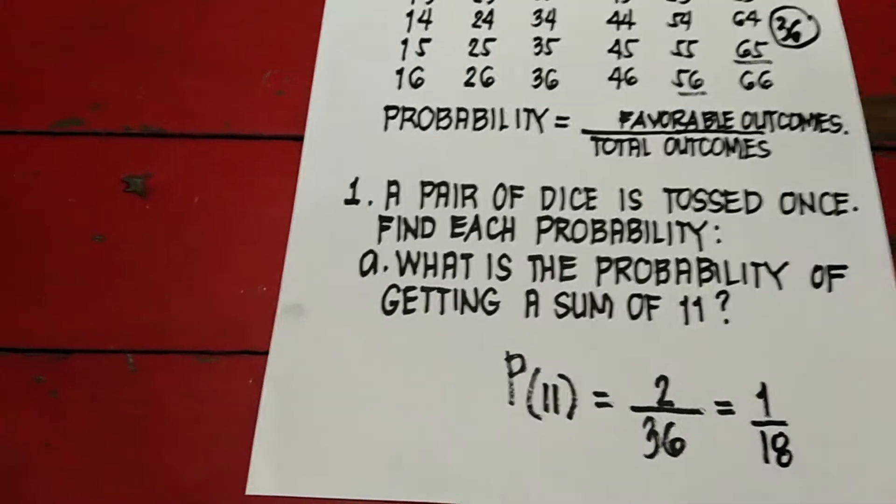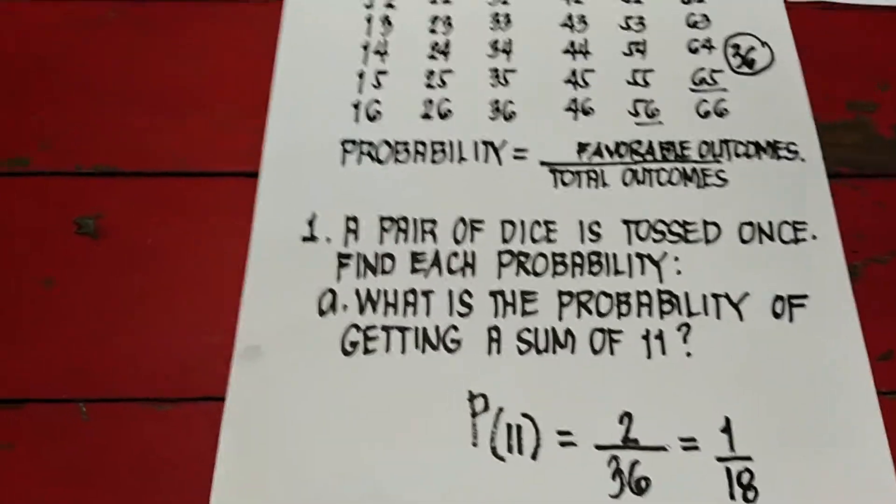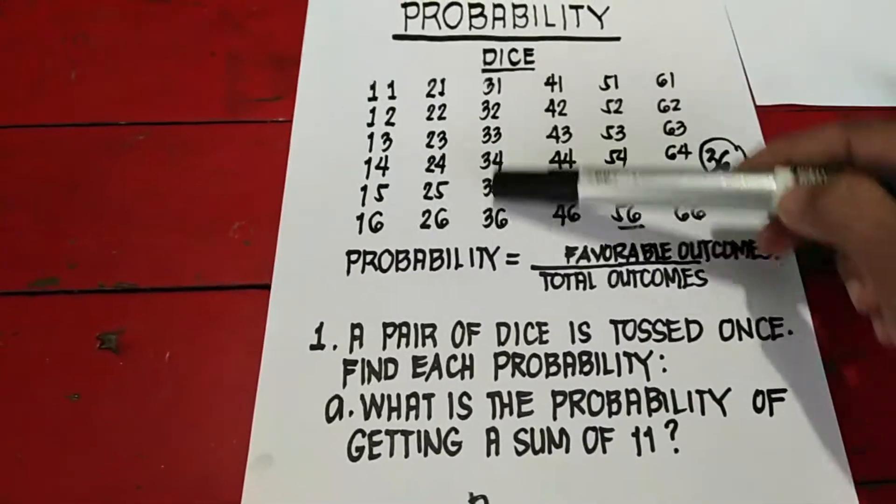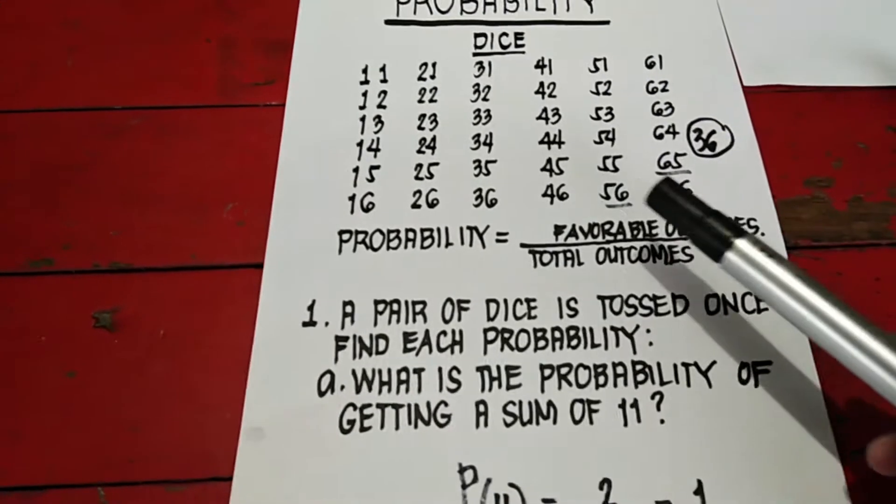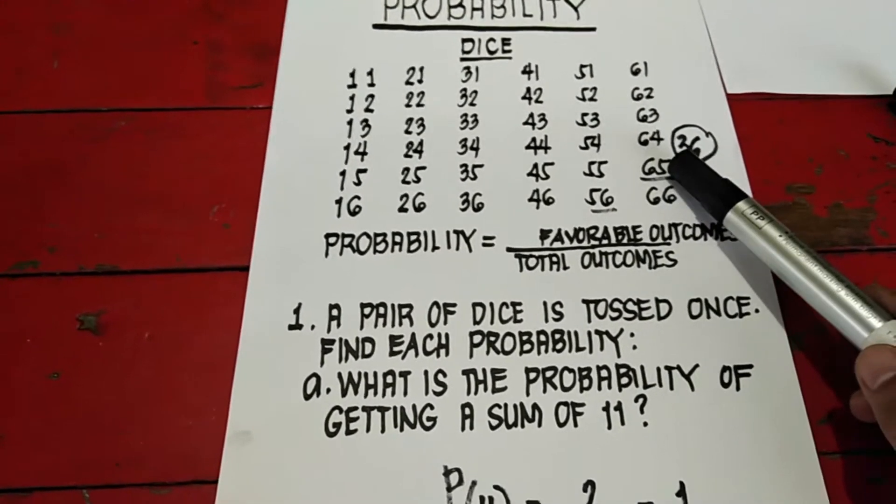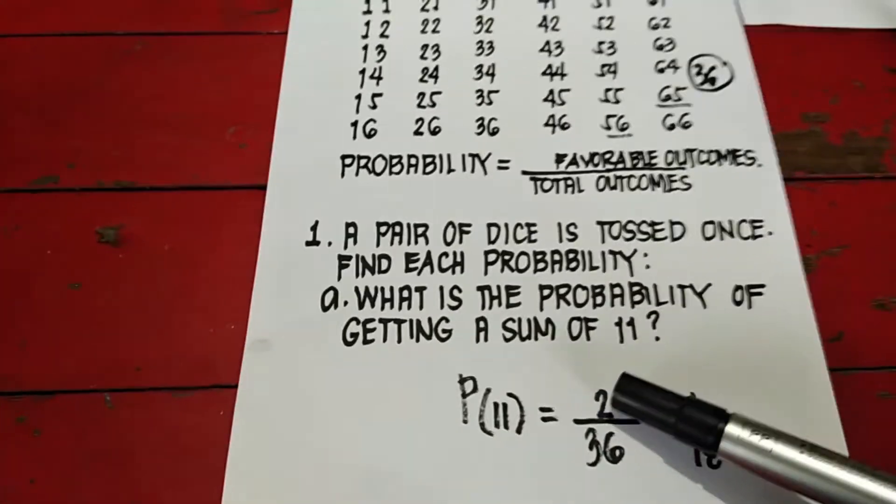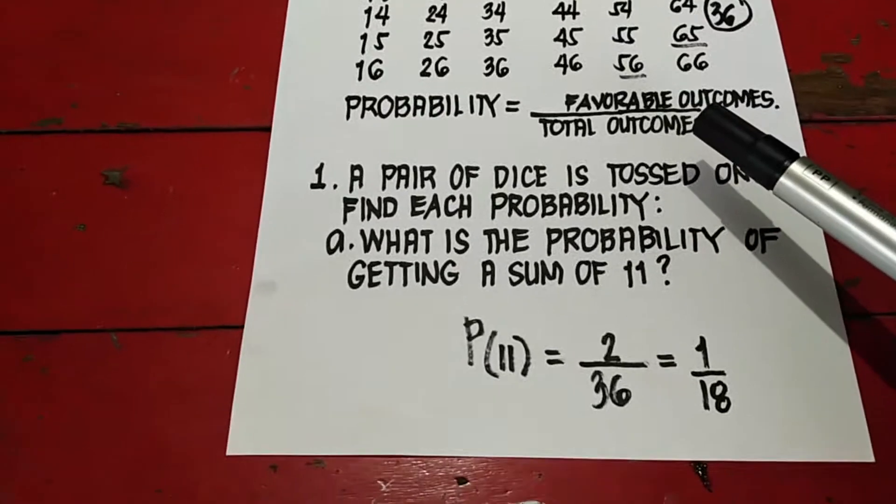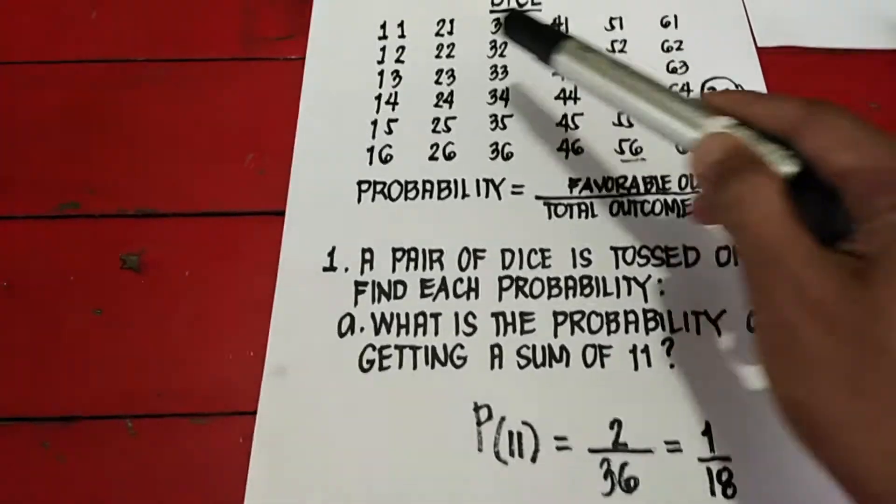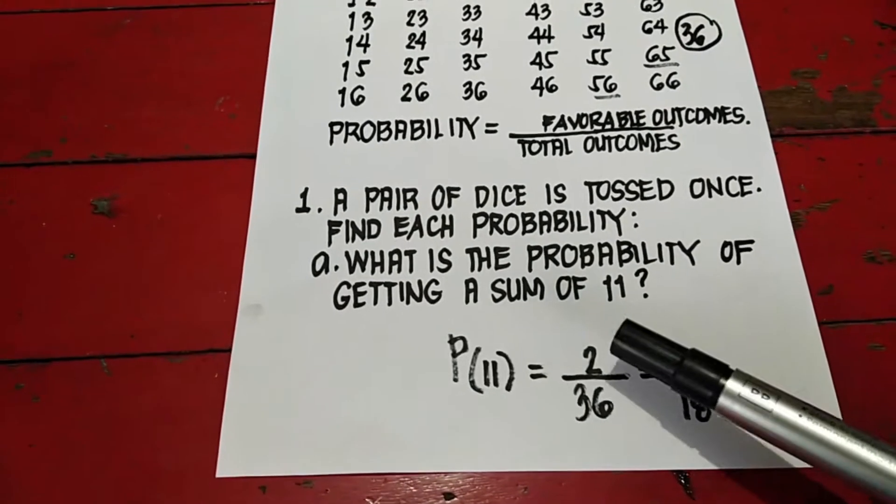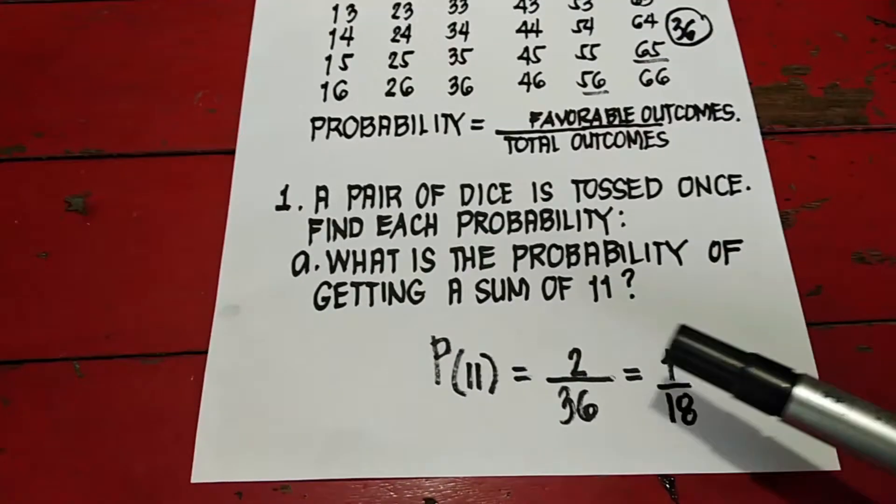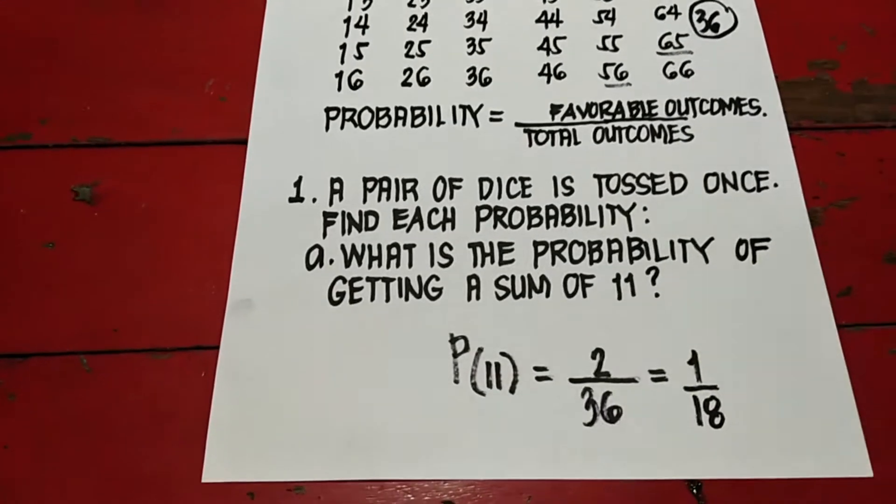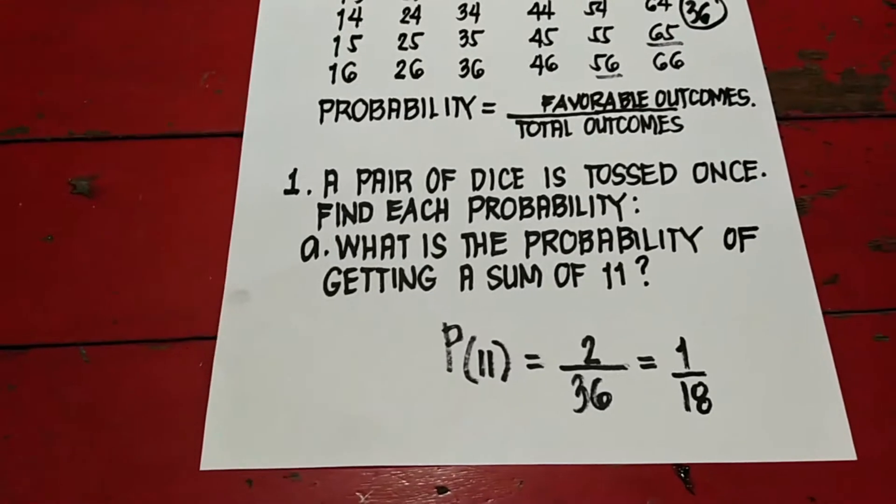Tingnan natin yung sum na 11 dun sa mga possible outcomes dun sa dice. Wala din dyan. Ang possible na 11 lang is yung 5, 6 and 6, 5. 6 plus 5 is 11. 5 plus 6 is 11. So dadalawa lang sila. Divided by, bakit may nasa baba? Because it is a total outcomes. There are 36 lahat yung possible sa dice natin. So 2 over 36. Tapos, the lowest term. Divided sa 2, kaya 1. Divided sa 2, kaya 18. So probability of getting the sum of 11 is 1 over 18.